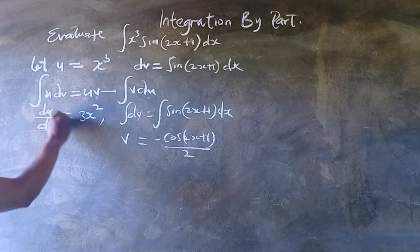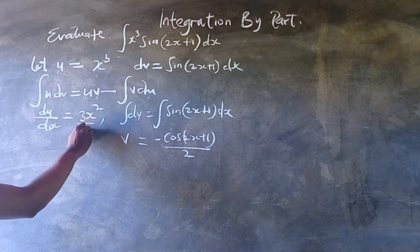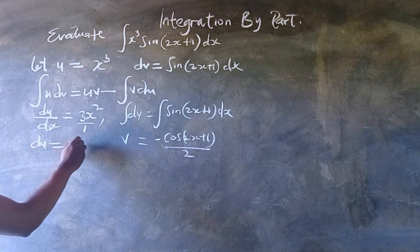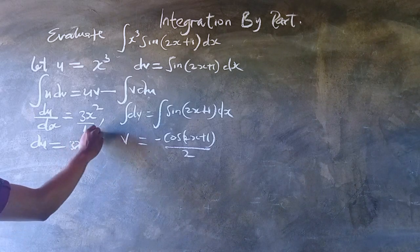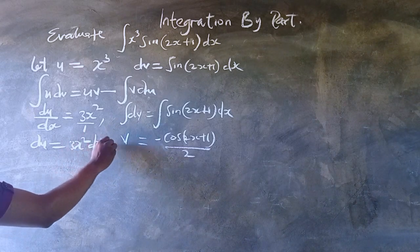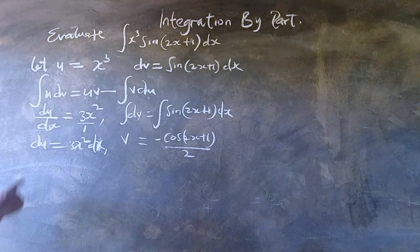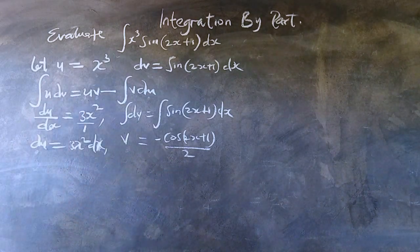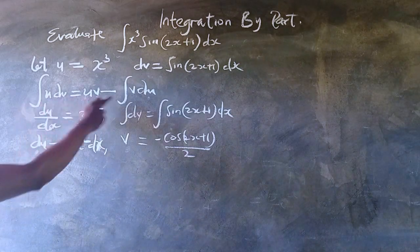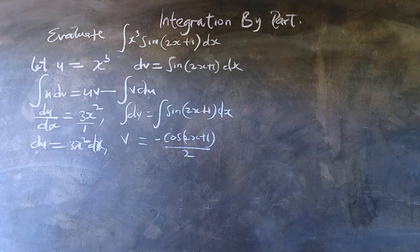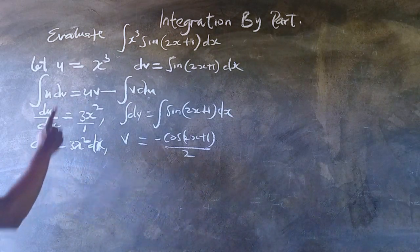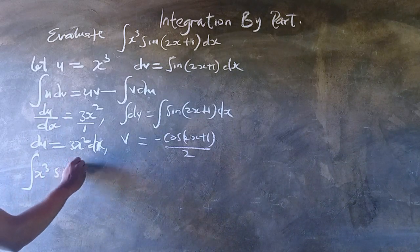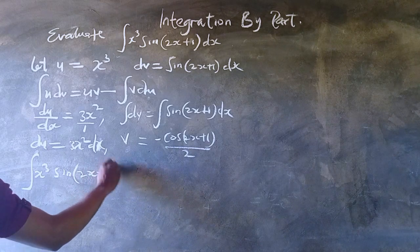We cross-multiply and obtain du equals 3x squared multiplied by dx. Now we have obtained v, we have obtained u, and we have obtained du. Let us go on and put this back into the formula.